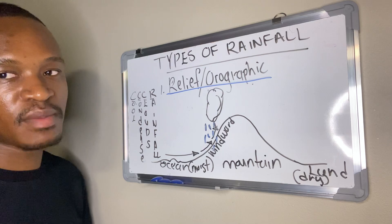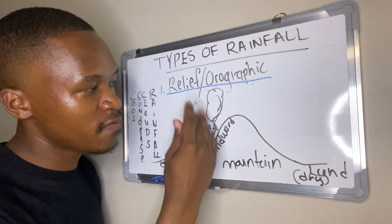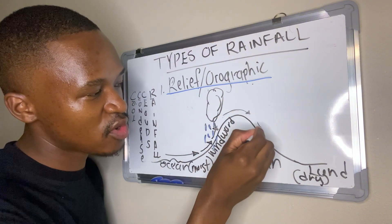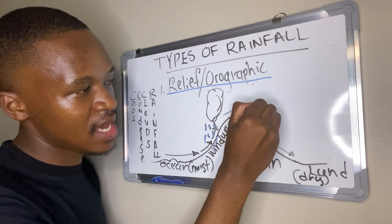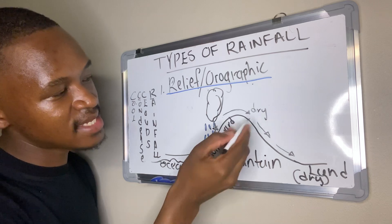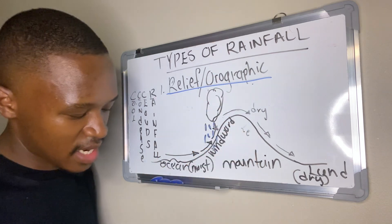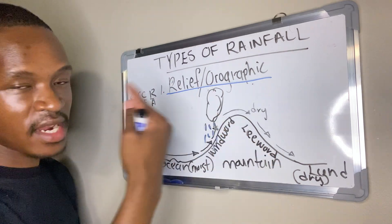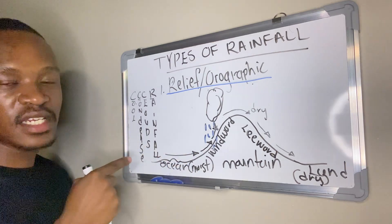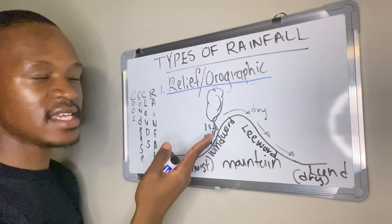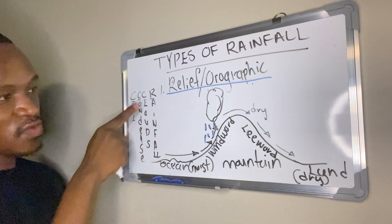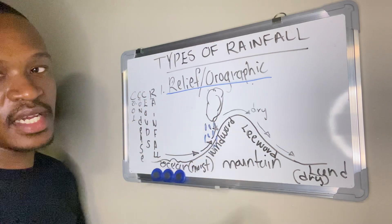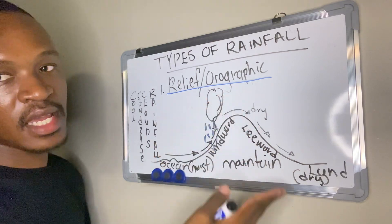Orographic rainfall happens on the windward side of the mountain. The remaining air, after cloud formation and precipitation, will descend on the other side of the mountain — the leeward side. The remaining air is dry, and this dry air sinks on the leeward side. So rainfall happens on the windward side when moisture from the ocean rises, cools, and condenses to form clouds. On the leeward side, the remaining dry air descends.